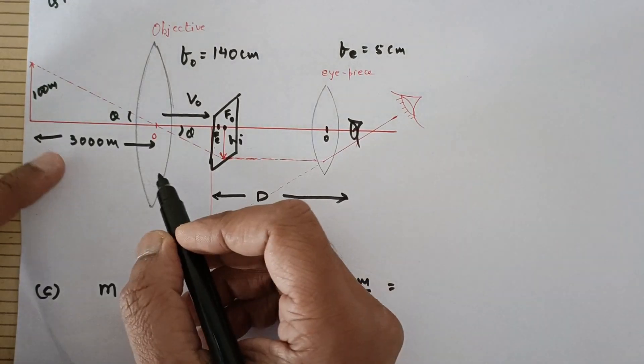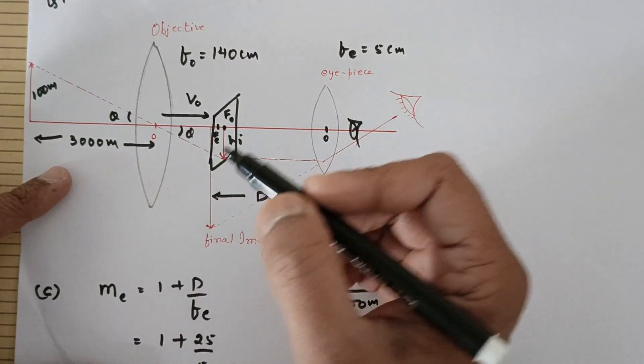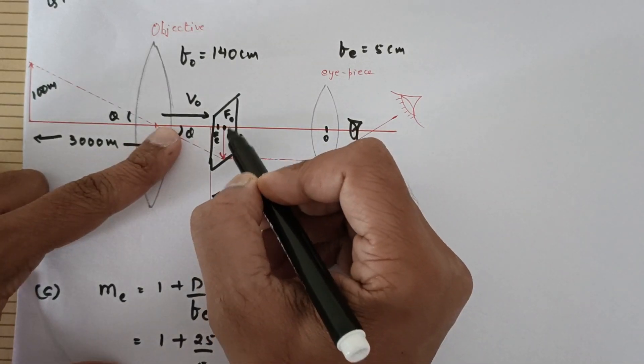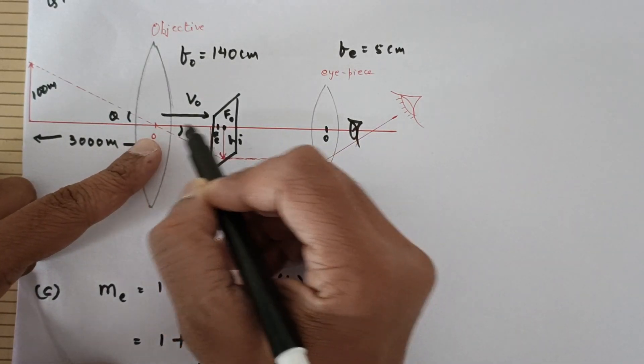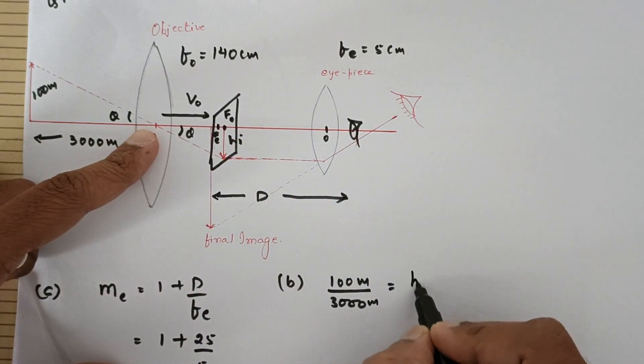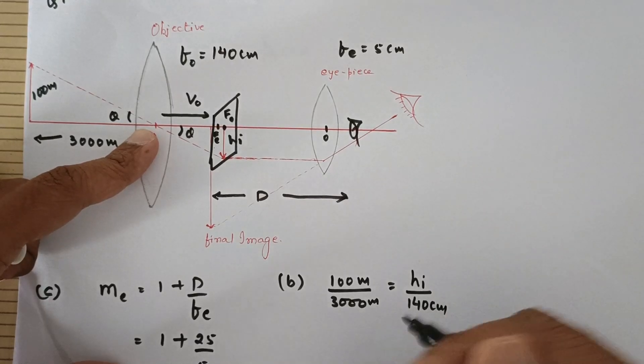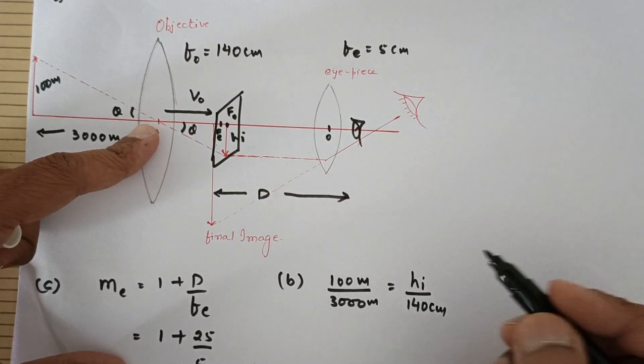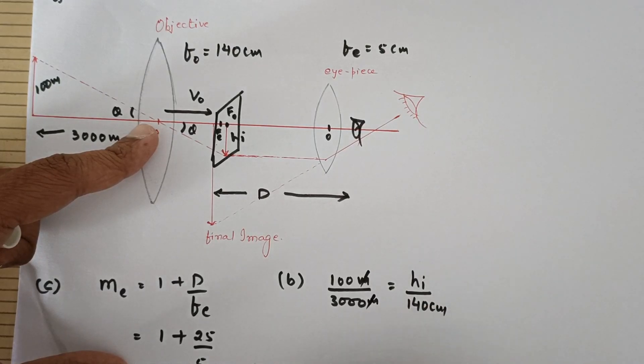You should be careful to convert everything into SI units. Now here it would be equal to hᵢ upon this distance, which is the image distance or the focal length of the objective. So that is equal to hᵢ upon 140 centimeters. That is fine if you do not convert that into meters as well because these two are going to get cancelled.